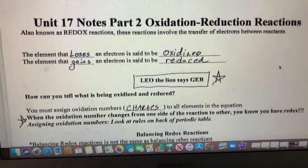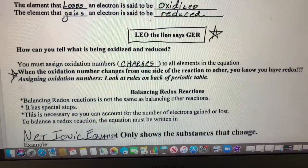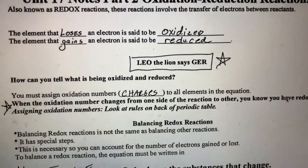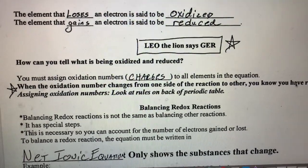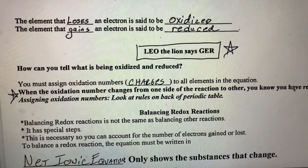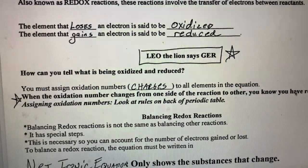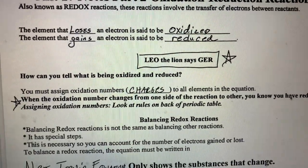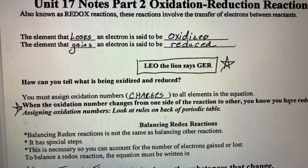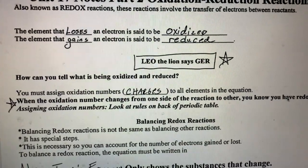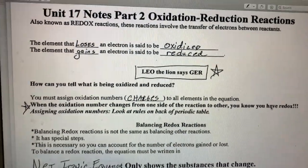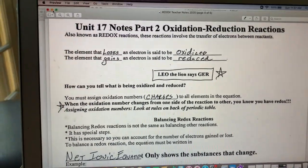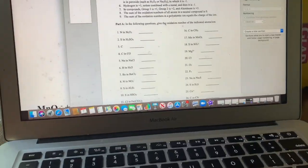One thing you're going to be responsible for doing is actually figuring out what's gaining and what's losing electrons, and we do that by assigning oxidation numbers. An oxidation number is very similar to a charge and we're used to charges. Group one has a plus one charge. We are very comfortable with that. There are however some rules for assigning oxidation numbers and you can find these rules on the back of your periodic table if you still have them.